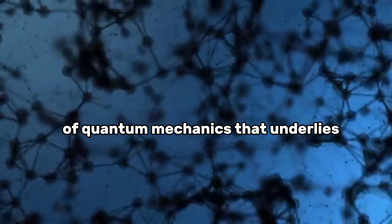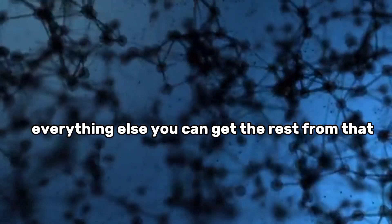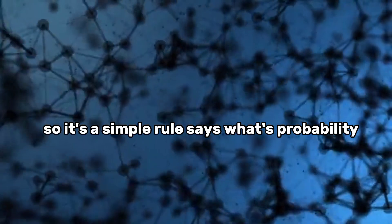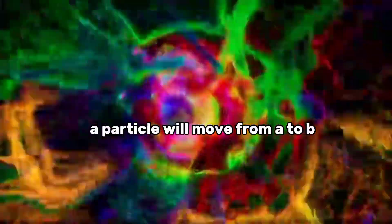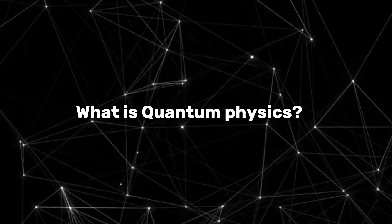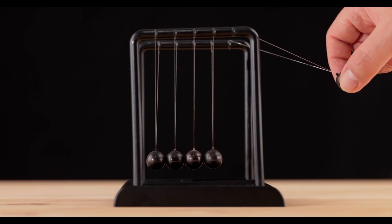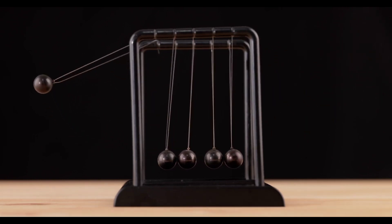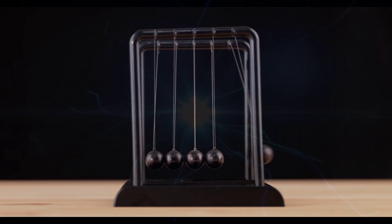It's a simple rule that says what's the probability a particle will move from A to B. Quantum physics, also known as quantum mechanics, deals with the behavior of particles at the smallest scale such as atoms, electrons, and photons. It provides a mathematical framework to understand the fundamental nature of matter and energy.